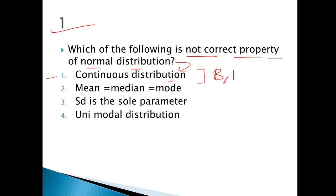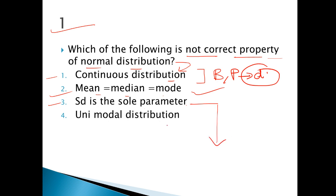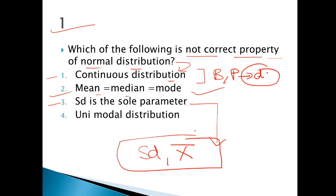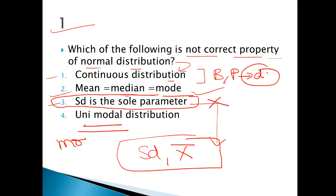Whereas binomial and Poisson are discrete distributions. Option 2: Mean is equal to median is equal to mode — that is correct under normal distribution. Option 3: Standard deviation is the sole parameter. I hope you are clear with this question. This option is not correct — that is our option number 3.